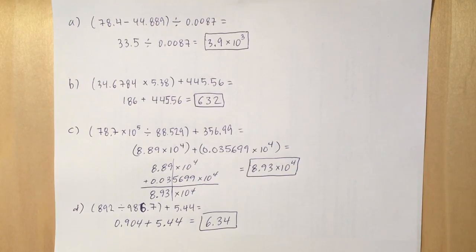So we go to the number with the least digits after the decimal place, which is 0.186, has 0 digits after the decimal place. So that's why we cut it off at 632, no digits after the decimal place.